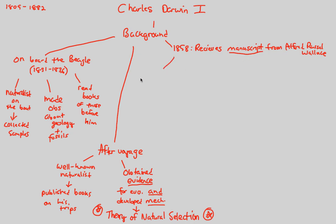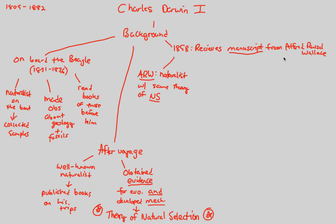Alfred Russell Wallace gets the short end of the stick, unfortunately. He was actually a naturalist — that was a really trendy thing to be back then — with the same theory of natural selection. In the manuscript he showed to Darwin, he believed almost the exact same thing that Darwin came up with after his own voyage. Basically, these two guys realized they both thought the exact same thing — truly the example of great minds think alike.